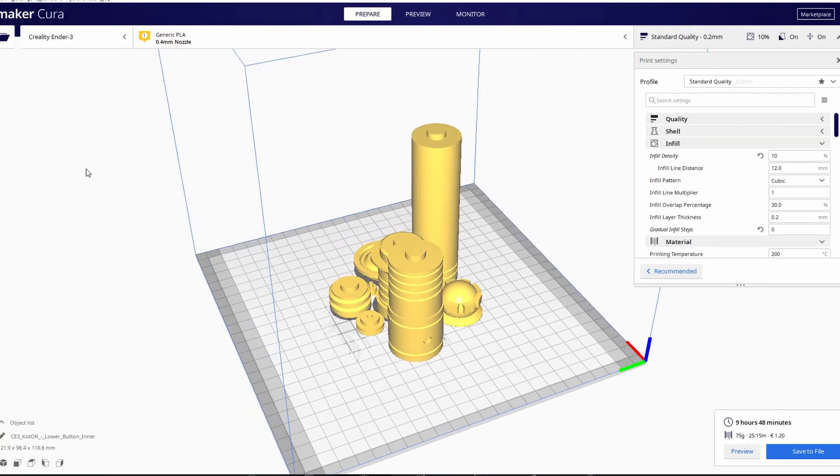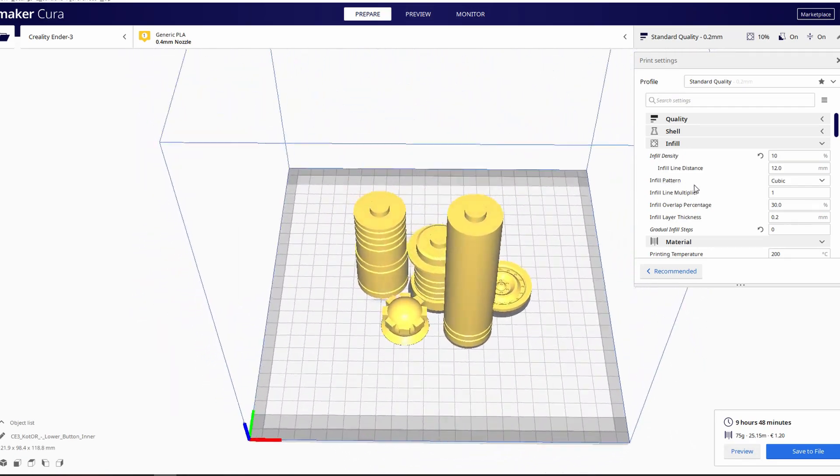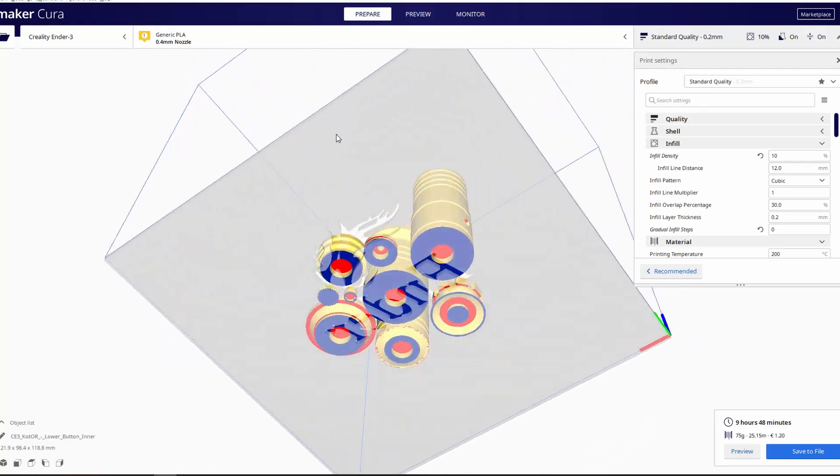I laid out the print in Cura like this and set it going. It took about 11 hours or so to print, and after that the print was done, so I took the parts off the printer and got ready to piece them together.